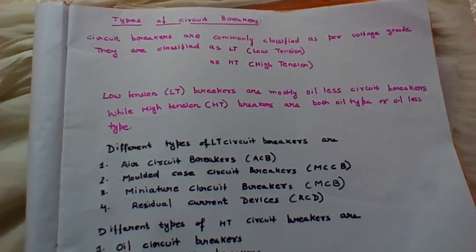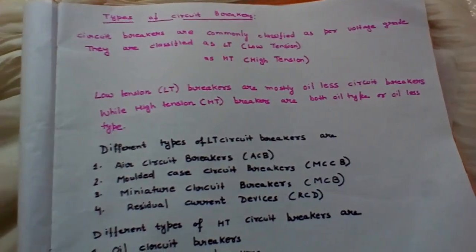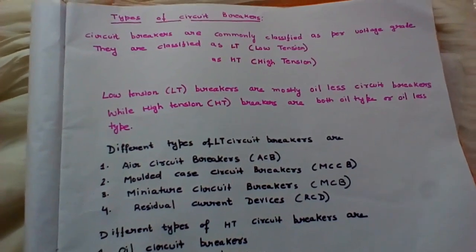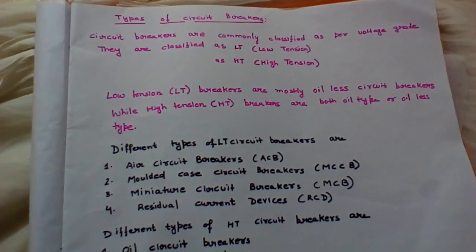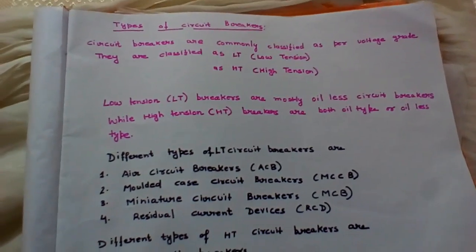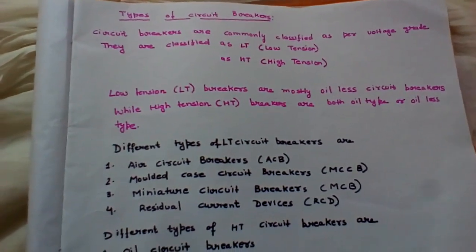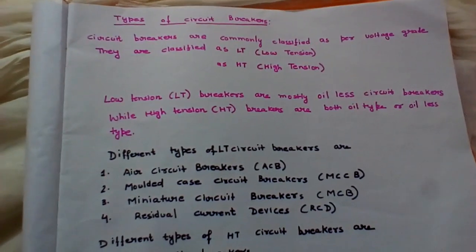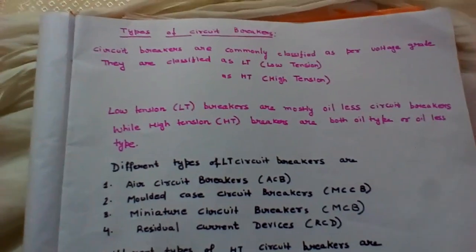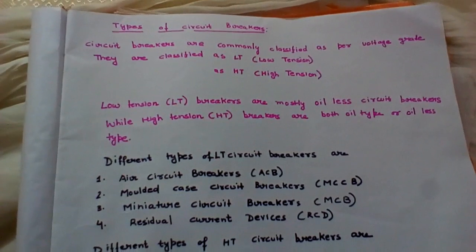Basically we have two kinds of voltages: one is called low tension voltage and another is high tension voltage. So depending upon the rating for which the circuit breakers are used, we classify them as low tension circuit breakers or high tension circuit breakers.